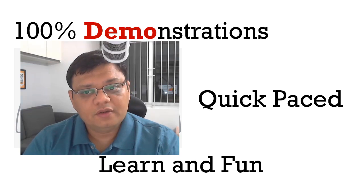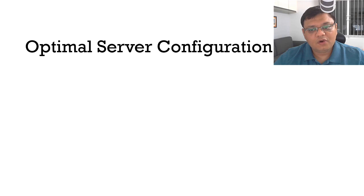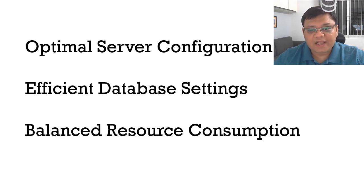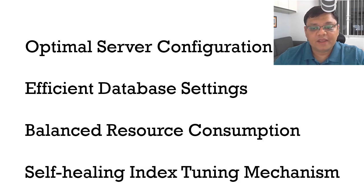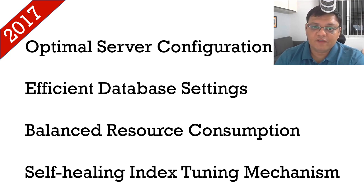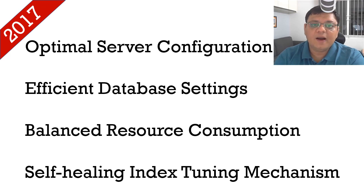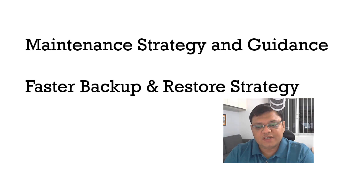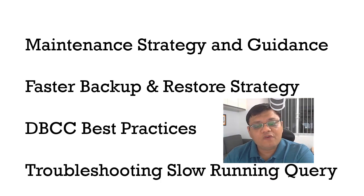I'm going to teach you how to achieve optimal server configuration, or how to set your database in such a way that it gives you maximum performance. I will also talk about how you can balance your resource consumption. One of my favorite topics is the self-healing index tuning mechanism. All of this will be updated for SQL Server 2017, and I will also discuss 2019. We'll make sure all scripts are ready for 2017 and earlier versions all the way back to 2008 R2. We'll also cover maintenance strategy and guidance, faster backup and restore strategies, DBCC best practices, and troubleshooting slow-running queries.